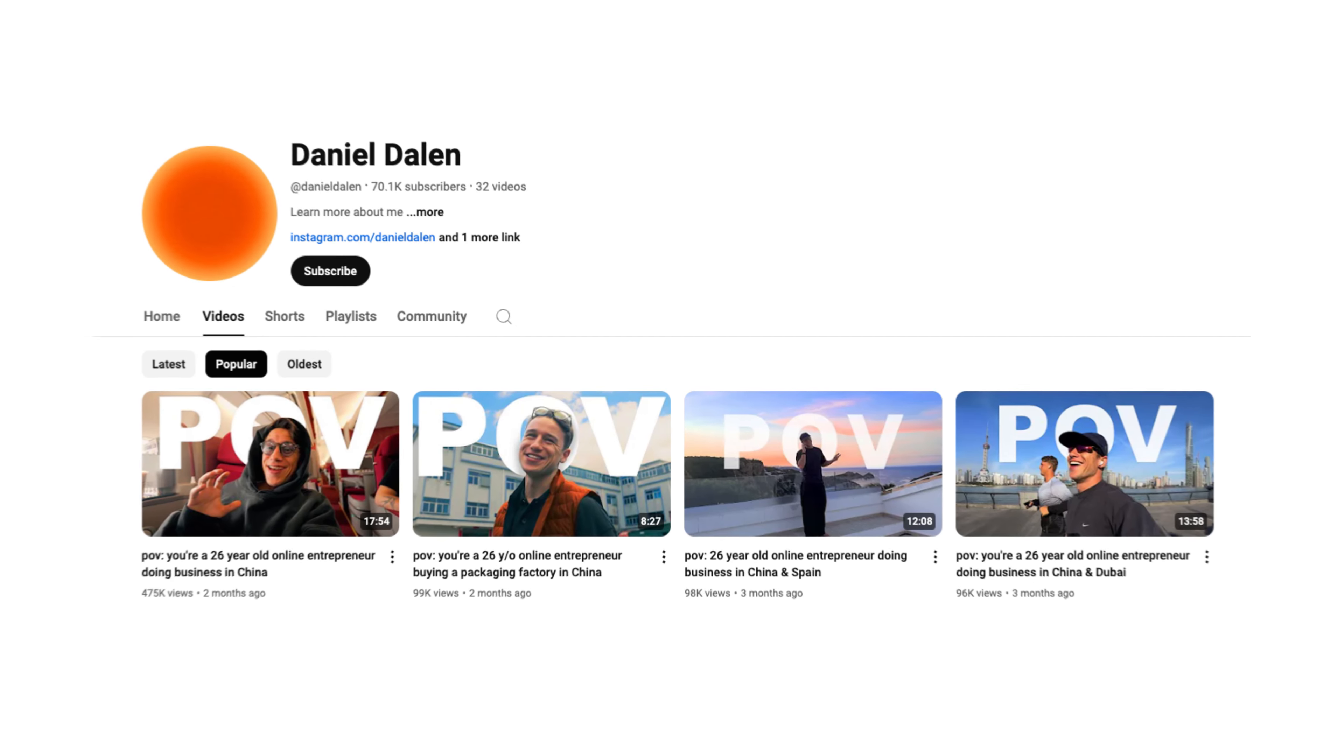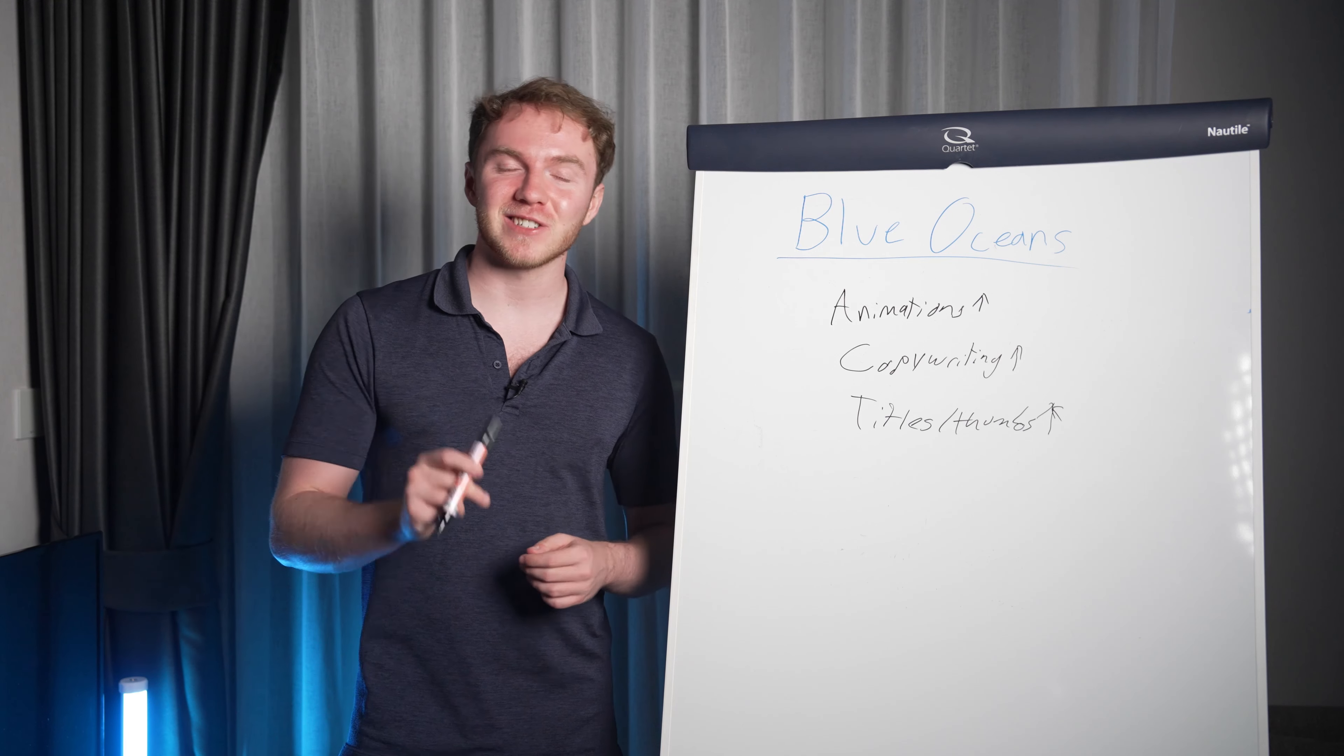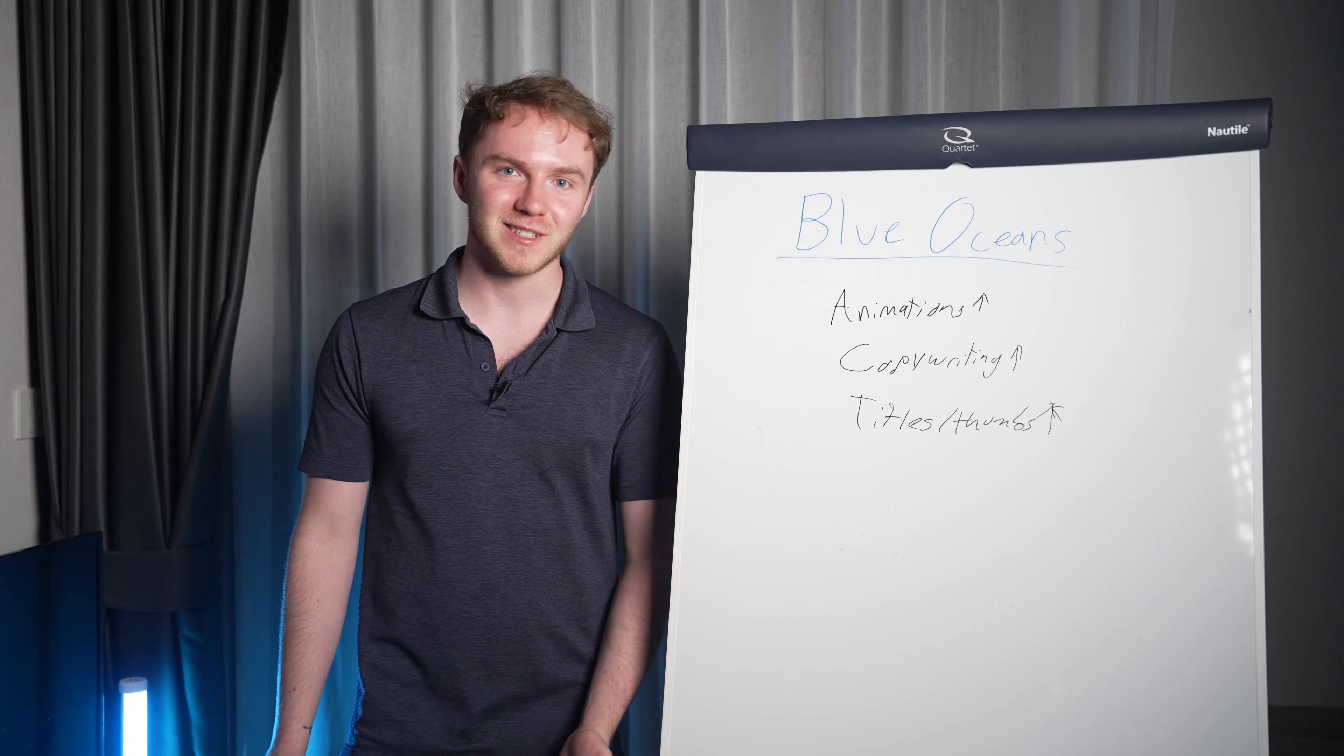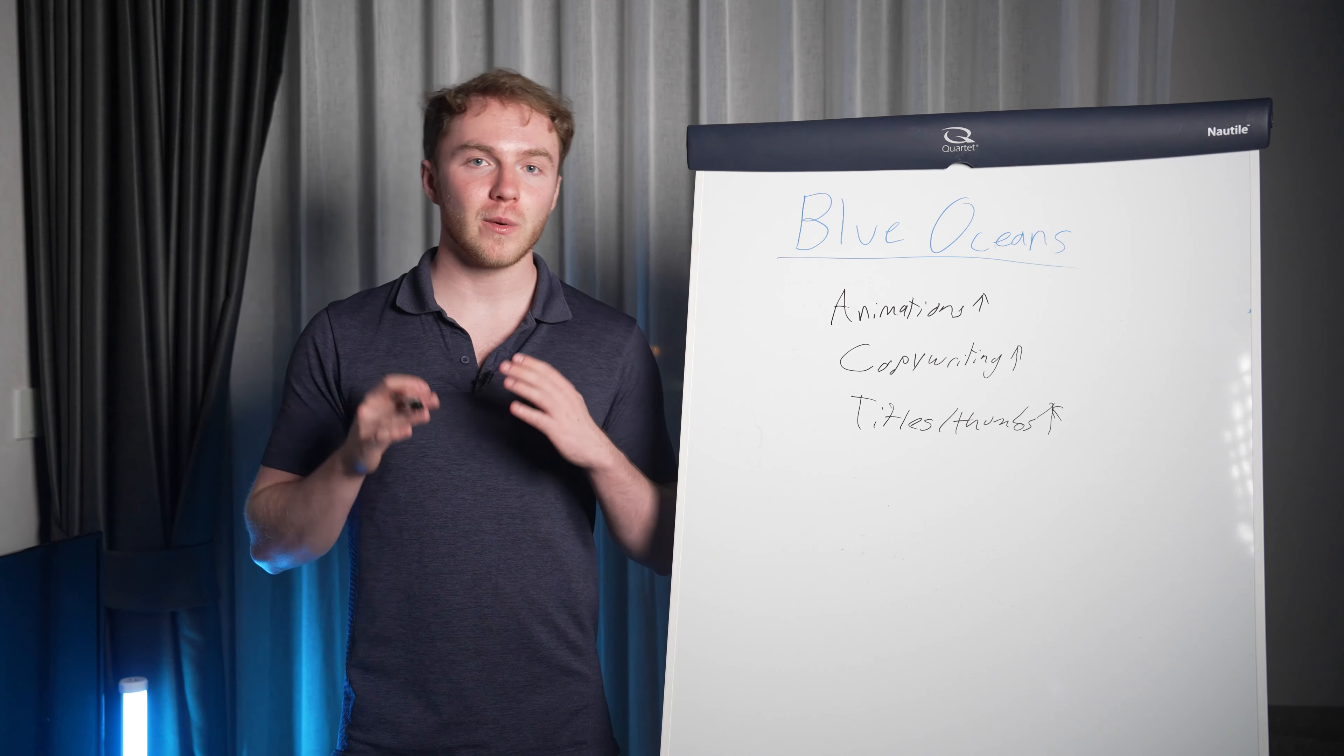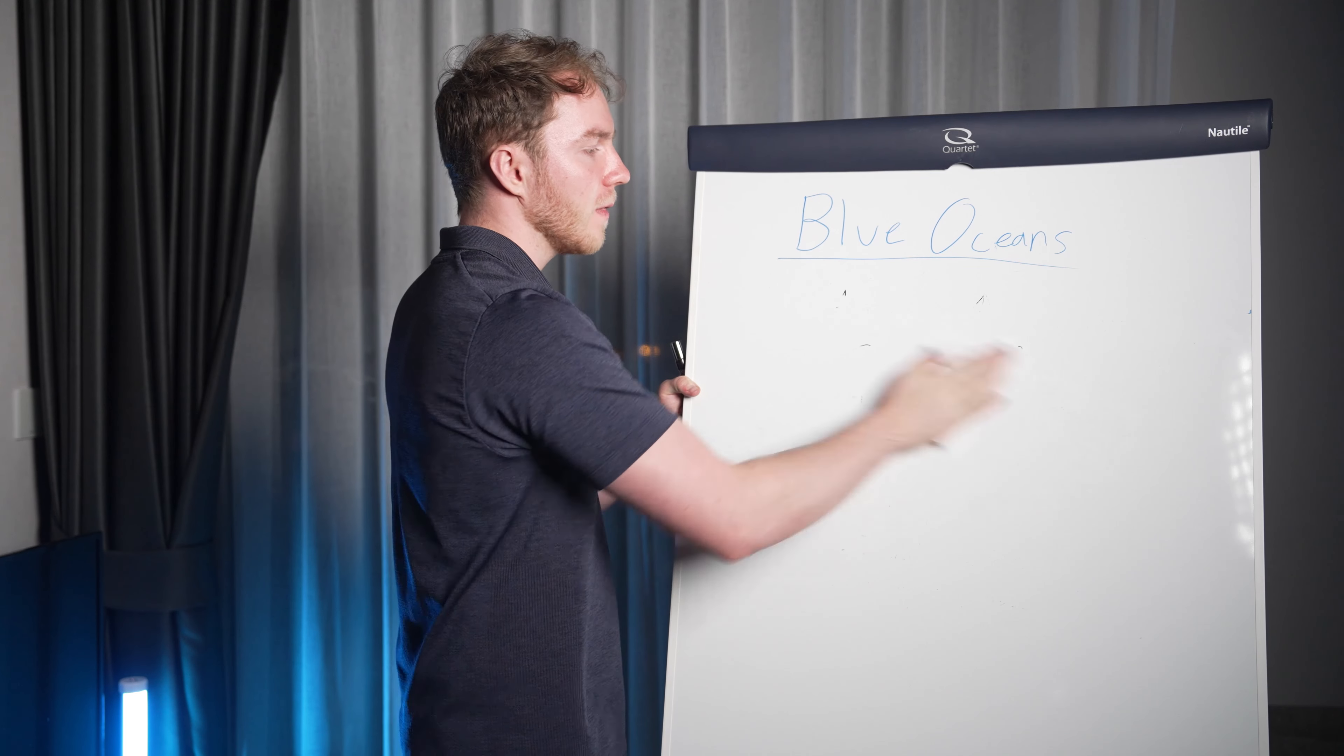Another example of a blue ocean would be a business creator named Daniel Daylin. Now what he's doing to blow up hard right now, he was at like not even 10,000 subscribers like three months ago. He's just getting started. He's already at 50,000 by the time we're recording this video. I'm sure honestly probably by the time we post it, he'll be close to 100,000 subscribers. What he did differently is he saw that no one in the business space was showing what it was really like to grow their business, like showing the ups and downs. Everyone was just talking about it. No one was showing it. So that's the element of the business niche that he really innovated on.